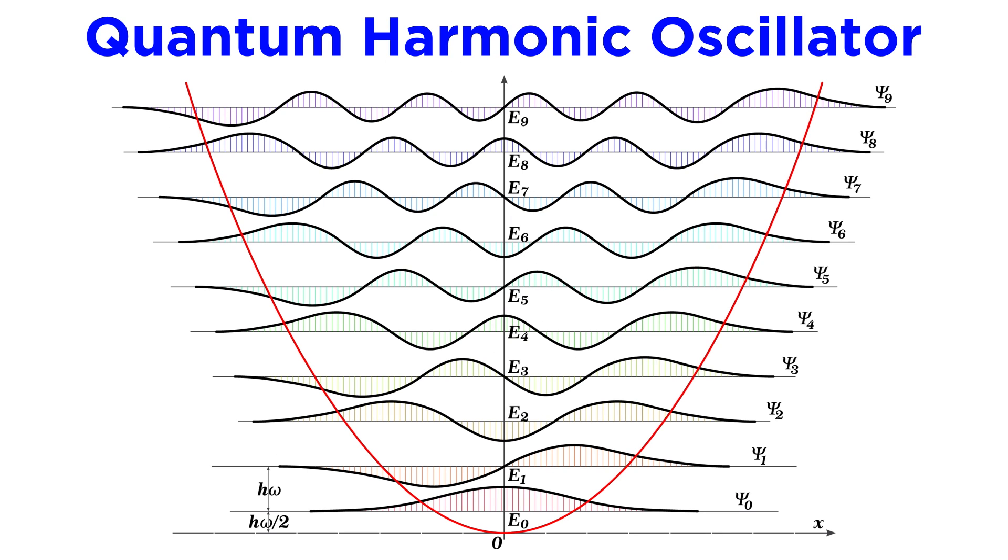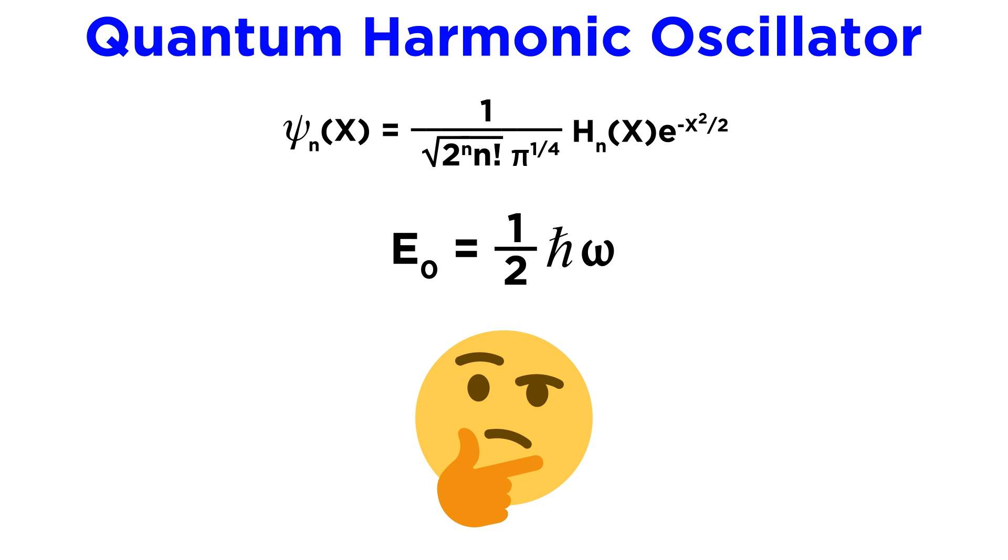For the past few tutorials we have been looking at the concept of a quantum harmonic oscillator. With the Schrodinger equation solved we are now ready to interpret our results and apply this information to gain some knowledge about the quantum world.